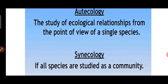Autecology — which we call auto-ecology — means 'self.' It is the study of ecology from the point of view of a single species. It deals with a particular species and its interrelations with the environment. Auto-ecology focuses on the interrelations of a single species.